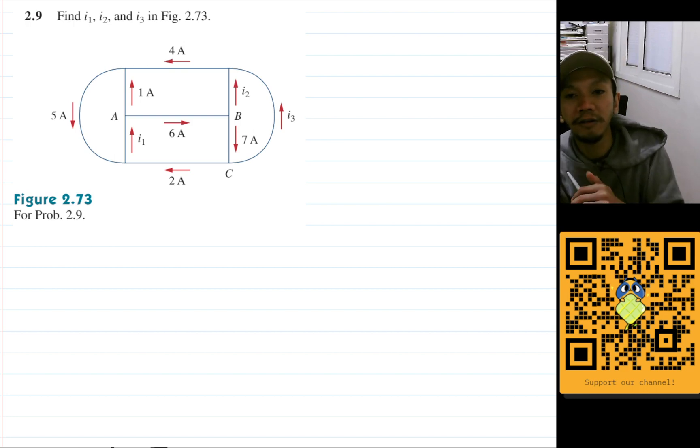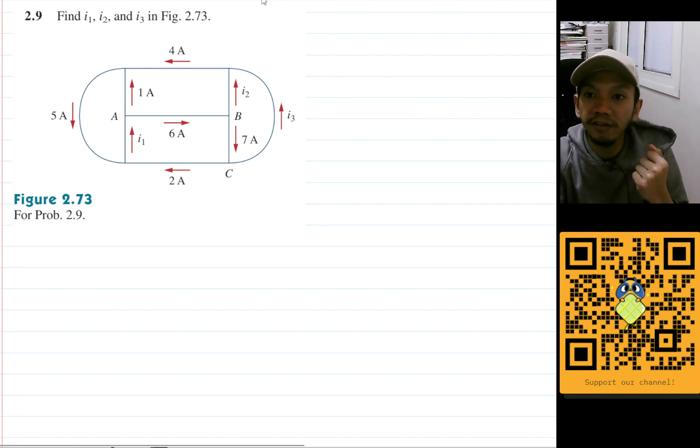Hello, my name is RD and the question is: find i1, i2, and i3 in Figure 2.73. So let's see, where is i1? i1 is here, and then i2, where is i2? i2 is here.